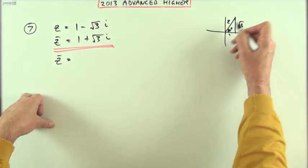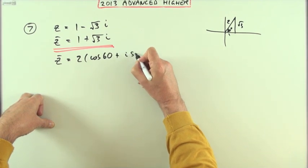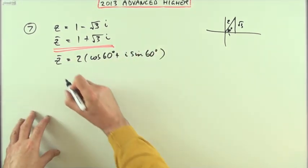So then, I've got for this, I've got two times cos 60° plus i sine 60°.